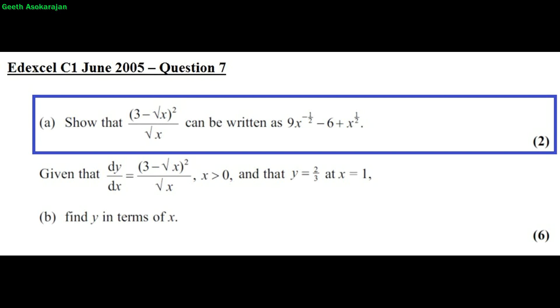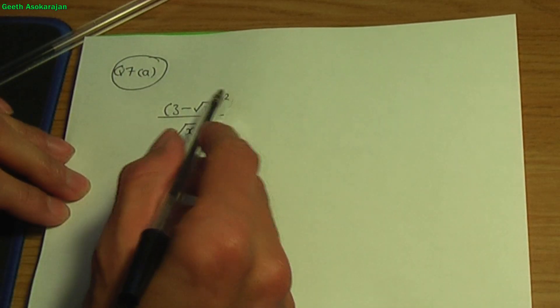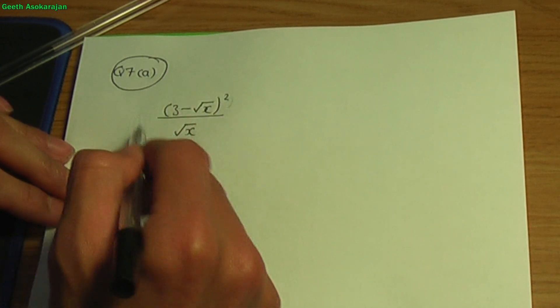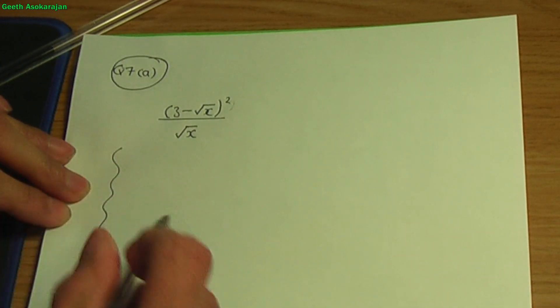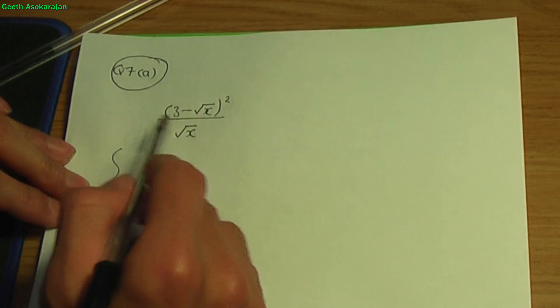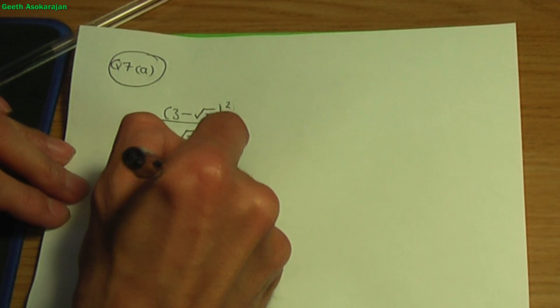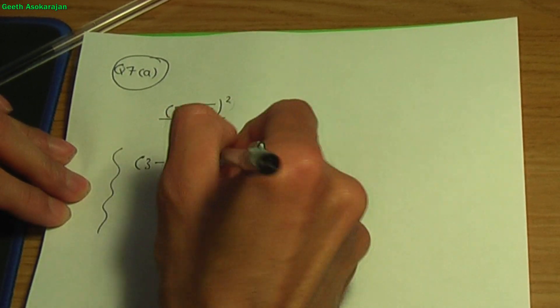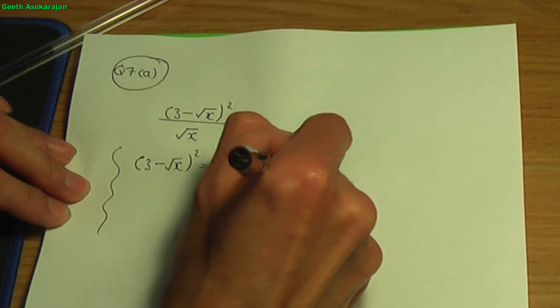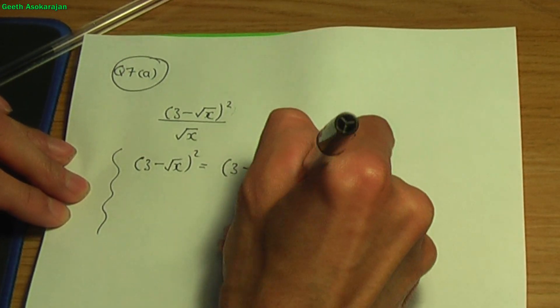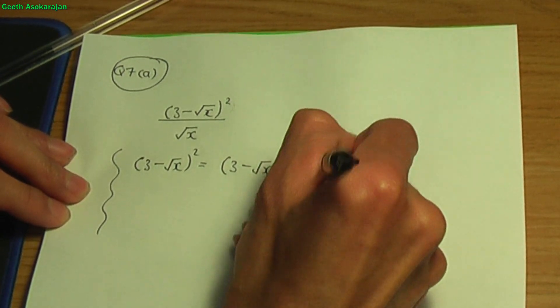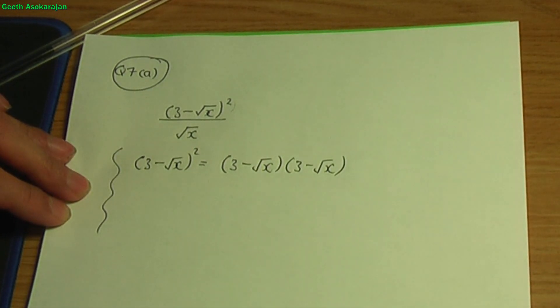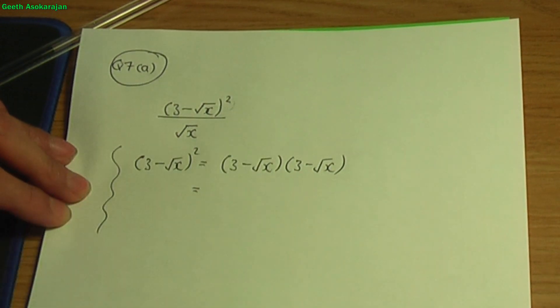Let's go to the paper and pen. So here's the fraction — let's simplify this. First of all I'm going to do a side calculation and expand the numerator. So let's multiply out (3 minus root x) squared. That is the same as writing (3 minus root x) multiplied by another (3 minus root x).